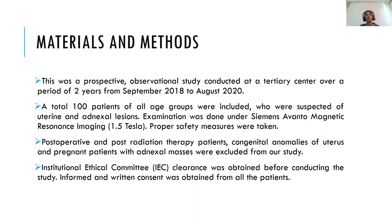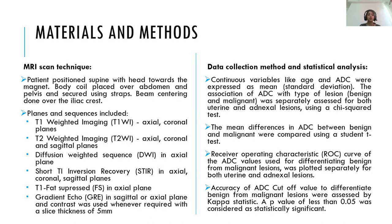This was a prospective observational study conducted at a tertiary center over two years from September 2018 to August 2020. A total of 100 patients suspected of uterine and adnexal lesions were included. Examination was done using a Siemens AVANTO 1.5 Tesla MRI machine. Post-operative and post-radiation therapy patients, congenital anomalies of the uterus, and pregnant patients with adnexal masses were excluded. Patients were positioned head towards the magnet, with a body coil over the abdomen and pelvis. Sequences included T1-weighted in axial and coronal planes, T2-weighted in axial, coronal, and sagittal planes, DWI in axial planes, STIR, T1-FS, gradient echo, and post-contrast when required, with 5 mm slice thickness.